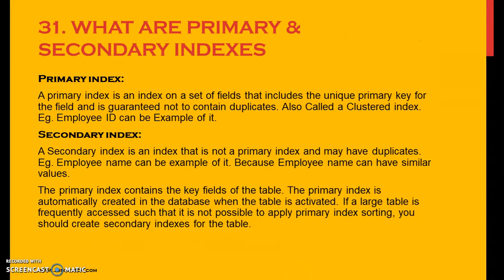So what are the primary and secondary indexes? A primary index is an index on a set of fields that includes the unique primary key and is guaranteed not to contain duplicates — also called a clustered index. For example, an employee ID is not repeated for any two records. A secondary index is something which can be repeated — for example a column called city may have duplicate records but can still be considered an index. The primary index contains the key fields of the table and is automatically created in the database when the table is activated. If a large table is frequently accessed such that primary index sorting cannot be applied, you should create secondary indexes for the table as well.